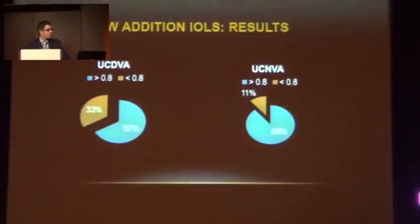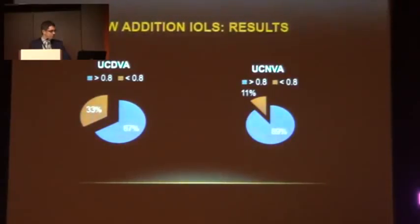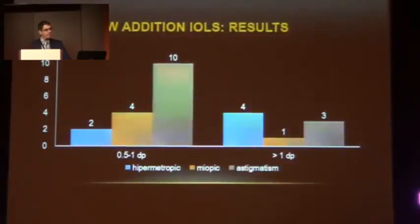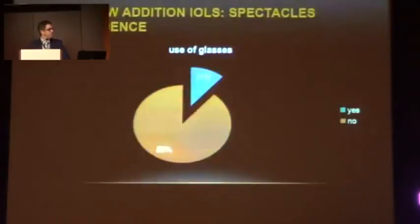These are the other results. Corrected far and near vision was more than 0.8 logMAR. In the far vision, 67% are fully corrected, but 33% need spectacle correction. This is because 30 eyes had a significant residual refractive error, as the low addition has less tolerance for residual astigmatism. The majority of patients had no problem with medium distance, and 90% of patients are spectacle independent.